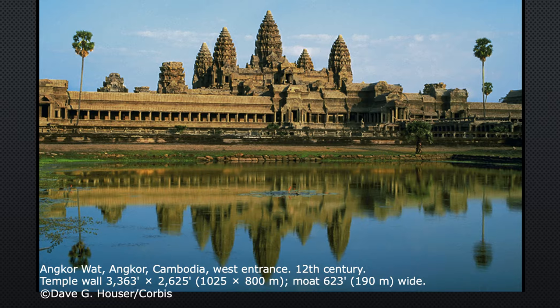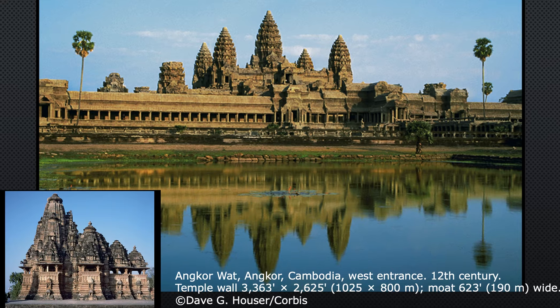Angkor was a huge city complex of palaces and temples with canals and pools. It combined Hindu and Buddhist images with portraits of secular rulers who claimed divinity. So it's what we would call syncretic, where you attempt to combine aspects of different religions and merge them together — bringing together Hindu, Buddhist, and the divine ruler all into one big thing.